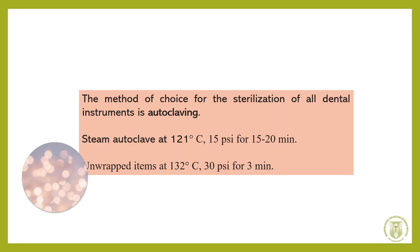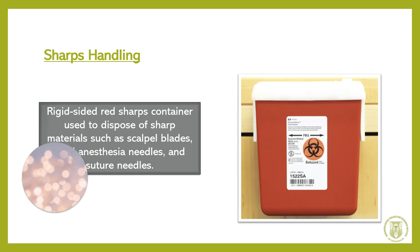The method of choice for sterilization of all dental instruments is autoclaving. Dental instruments are sterilized by autoclaving: steam autoclave at 121°C, 15 psi, for 15 to 20 minutes. Unwrapped items are autoclaved at 132°C, 30 psi, for 3 minutes. Sharp instruments which have blades must be disposed of properly.